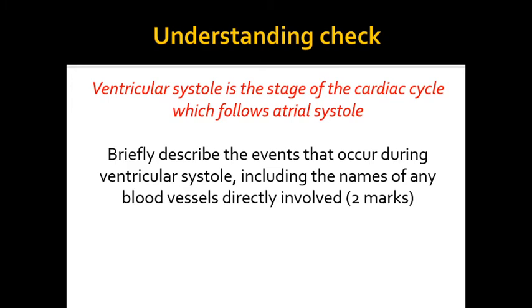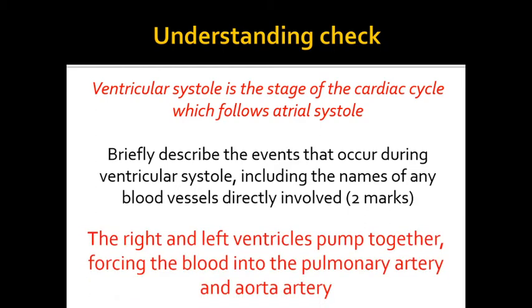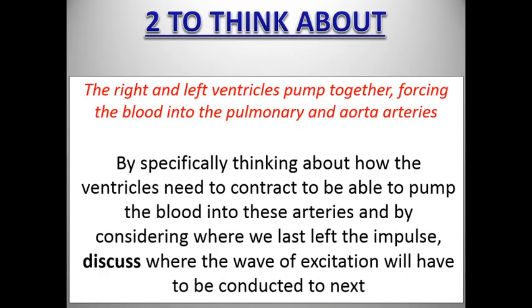Exam question: briefly describe the events during ventricular systole, including the names of blood vessels directly involved. Ventricular systole is when the right and left ventricles pump together, forcing blood through the semilunar valves and into the pulmonary artery and the aorta. The ventricles must contract from the bottom upwards in order to force blood up into the arteries, so the wave of excitation must be conducted downward first.